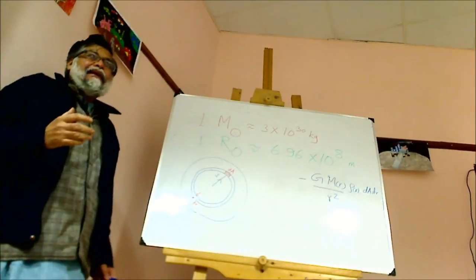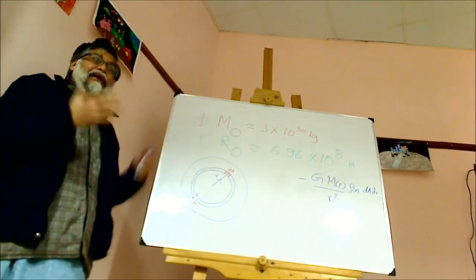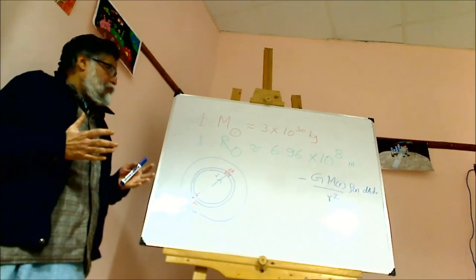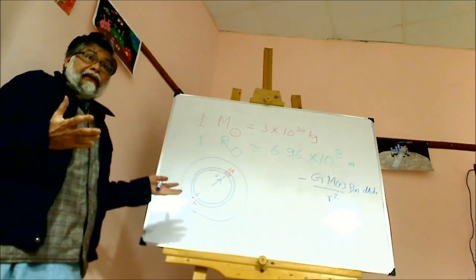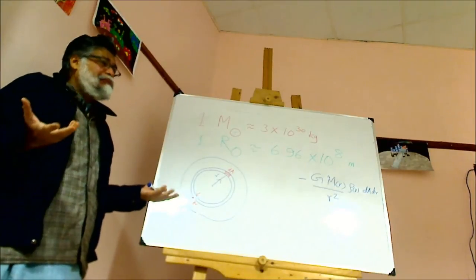So solid objects, the pressure counters the gravitational attraction. But the Sun is not solid, it is gaseous. Gaseous objects also have pressure.